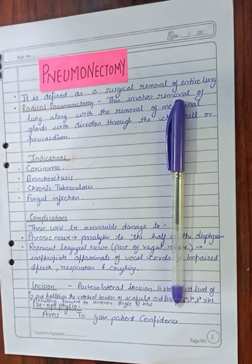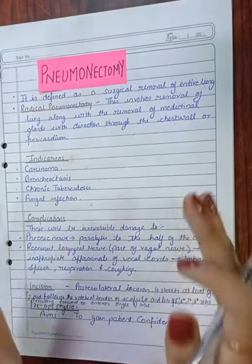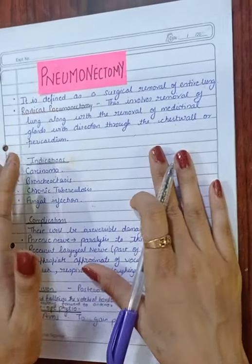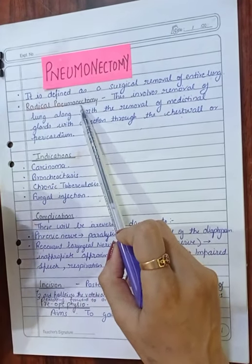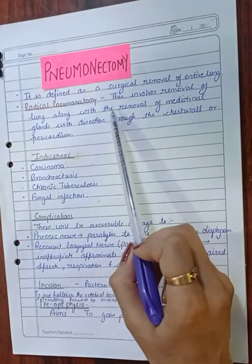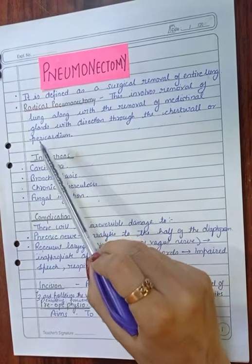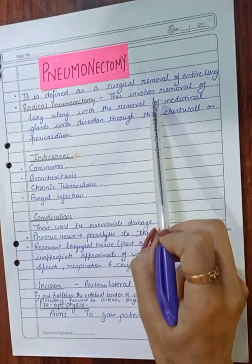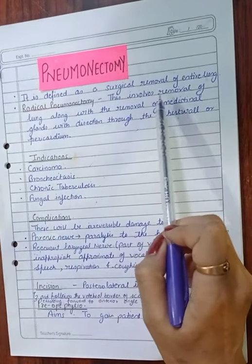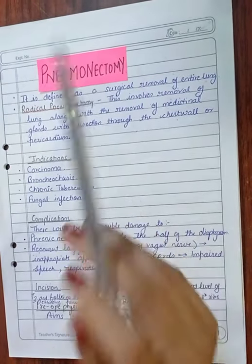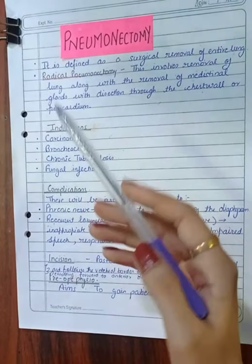Pneumonectomy is defined as the surgical removal of an entire lung — remember, entire lung, not a part of it. Radical pneumonectomy involves the removal of the lung along with the mediastinal glands, with dissection through the chest wall or the pericardium.